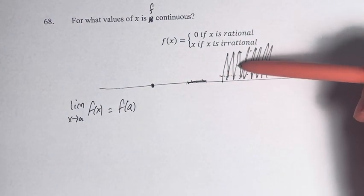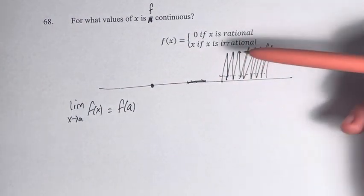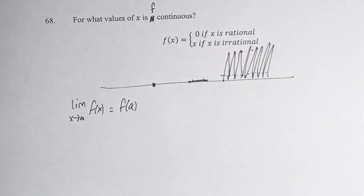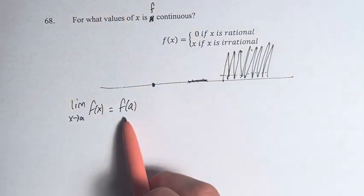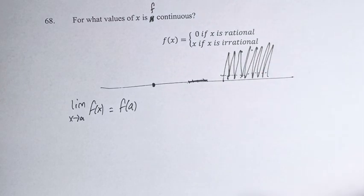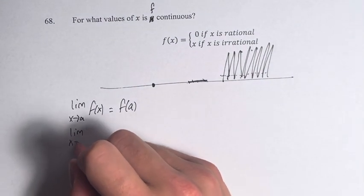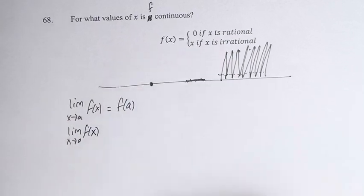And as you can see here, if it's always jumping back and forth between x, whatever x is, and 0, then the only way for this to be true is if x was equal to 0. The limit as x approaches 0 of f of x, well, what would that look like?